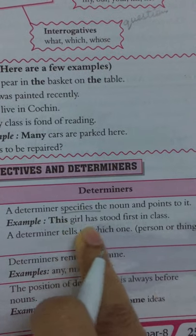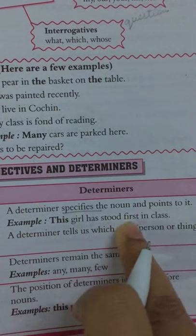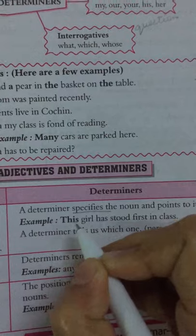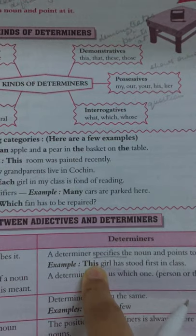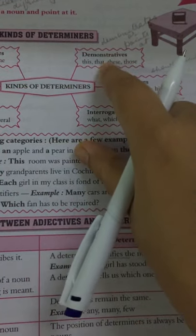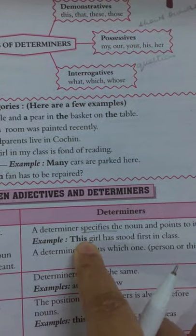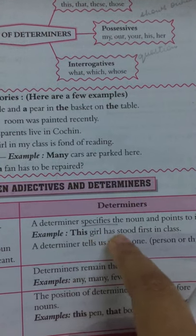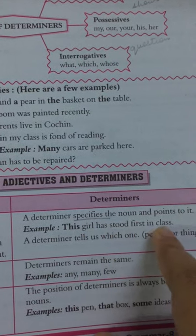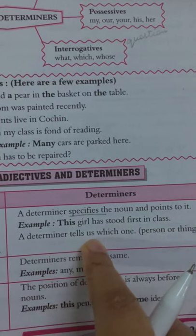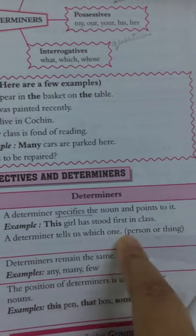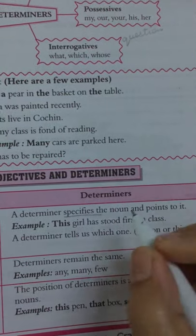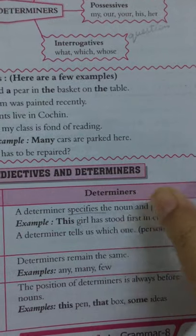For example: This girl has stood first in class. 'This' is a demonstrative determiner pointing at a specific girl. A determiner tells us which person or thing — it points at the person or thing.